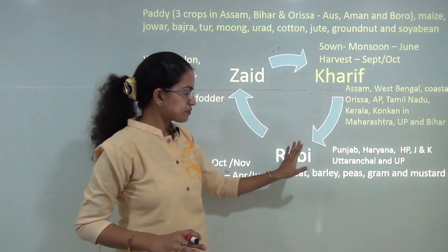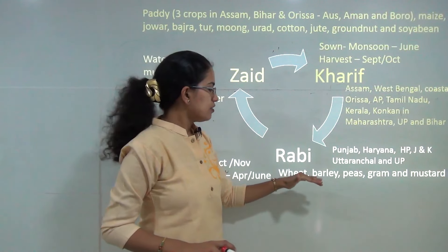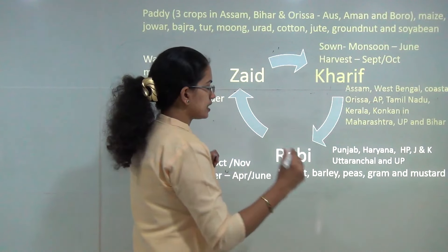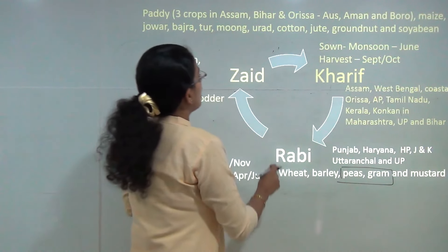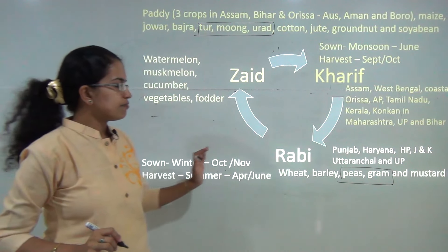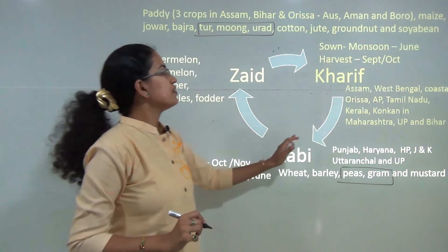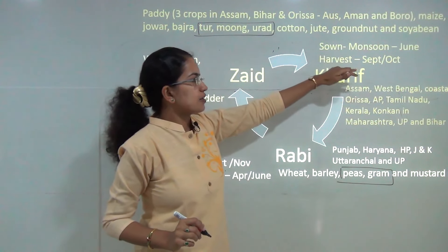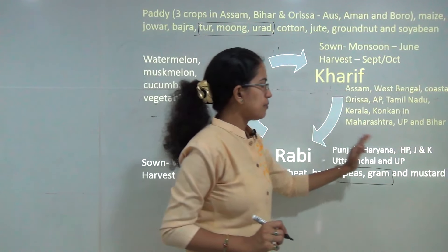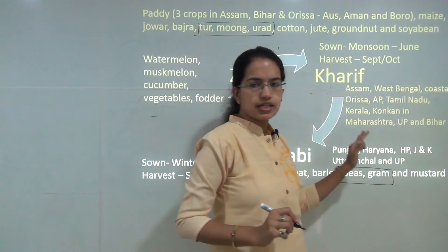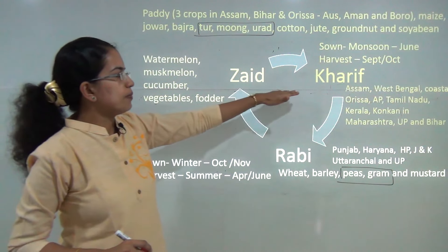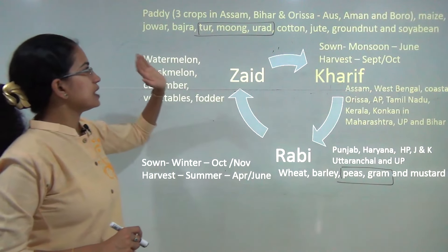Rabi crops include wheat, barley, peas, grams, and mustard. Among pulses, peas and grams are part of Rabi, while Tur, Moong, and Urad are part of Kharif. The areas where Rabi is grown are mainly Punjab, Haryana, Himachal Pradesh, Jammu & Kashmir, Uttaranchal, and Uttar Pradesh. The remaining parts predominantly have Kharif crops. Under Kharif, rice is grown in Bihar, Assam, and Odisha.